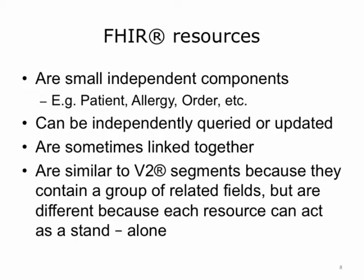A fundamental concept of FHIR is that the information exchanged is communicated in small, independent components called resources. Some examples of resources are patient, allergy, and order. In V2, the information was in segments, whereas in FHIR the information is in what are called resources. Resources can be independently queried or updated. Sometimes resources are linked together, which can be preferable because you have the context and associations for the information. Resources are similar to V2 segments in that they contain a group of related fields, but each resource can stand alone and be exchanged independent of other resources.